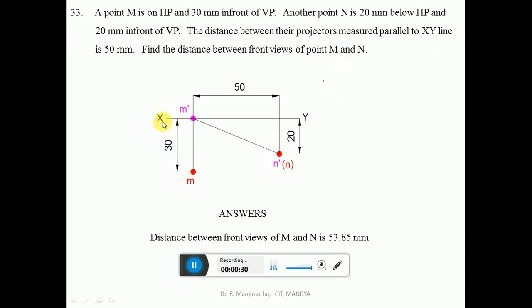First you draw the X, Y line and mark X, Y here. The point M is on HP, so first we are going to consider point M. Since point M is on HP, obviously the point's front view is on the X, Y line. Mark that point as M dash.